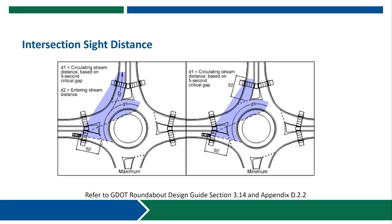Intersection sight distance is the distance required for a driver approaching the yield line to be able to see and react to conflicting traffic streams. Starting 50 feet back from the yield line, the driver needs to be able to identify whether there are any conflicting vehicles present so they can make a decision as to whether they need to yield or whether they can proceed into the roundabout if the areas shown in purple are clear. We consider two different traffic streams when evaluating these intersection sight distances.